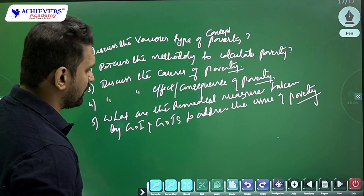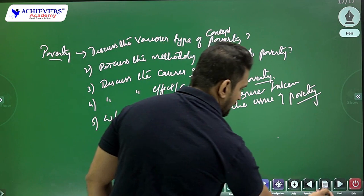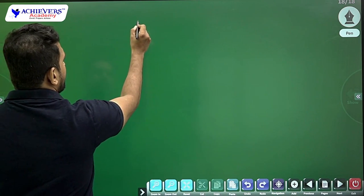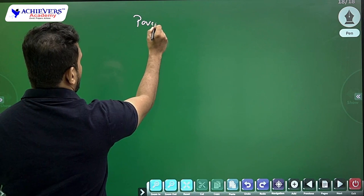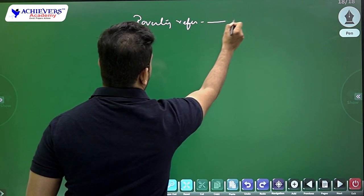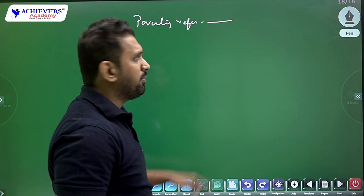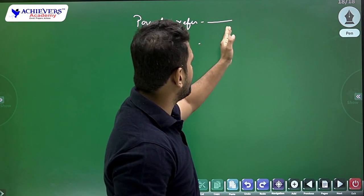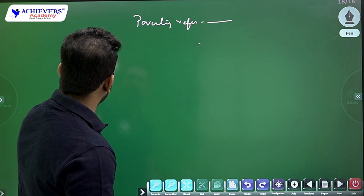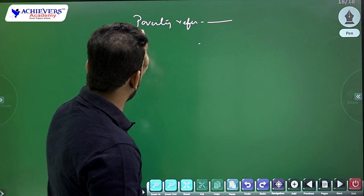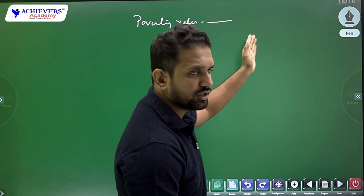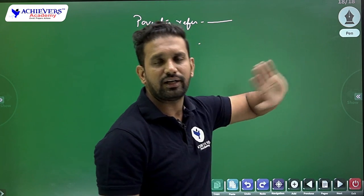Now if the question 'discuss the various types of poverty' comes, the first thing I will do is write the definition of poverty. 'Poverty refers to a socio-economic condition where a certain section of society is unable to fulfill the basic necessities of life — food, clothing, shelter.' Then: 'Poverty has been one of the mainstay problems of the Indian economy; poverty coupled with unemployment has led to a lower standard of living.' I will write two important points to support the definition.